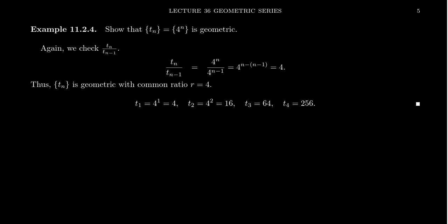Another example: let's show that the sequence t_n given by powers of four is likewise geometric. You'll see a very similar calculation. Looking at the ratio of consecutive terms, we take t_n on top, t_(n-1) on the bottom. For t_n, you record the formula 4^n. For t_(n-1), you replace n with n-1. That's your ratio.